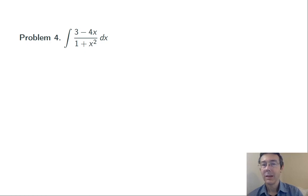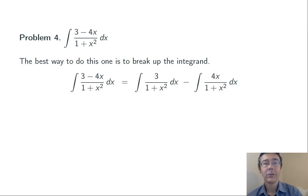Problem four. Integral of 3 minus 4x over 1 plus x squared dx. So this is a slightly tricky one. You have to have the insight to break this up into two pieces. But once you see that, it gets easy.